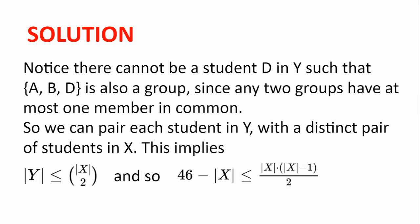So we can pair each student in Y with a distinct pair of students in X. And this implies that the number of students in Y is less than or equal to the number of students in X, choose 2.